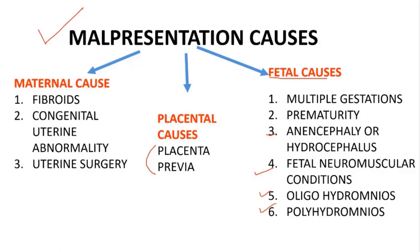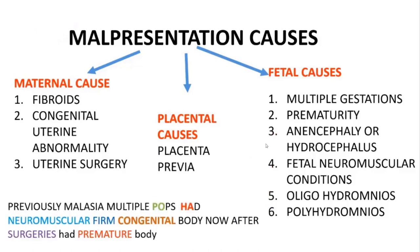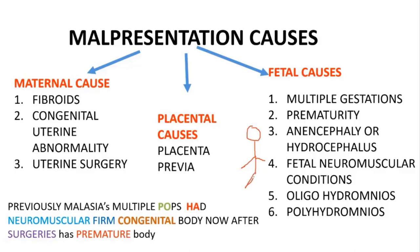I have made a mnemonic to memorize these causes. The mnemonic is: 'Previously, Malaysia's multiple pops — had neuromuscular femme congenital body. Now after surgeries, had premature body.' I used the country Malaysia because Malaysia resembles the word malpresentation.